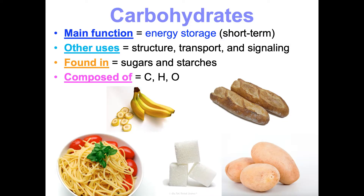If you think back to concept two, when we talked about the six essential elements for life — carbon, hydrogen, oxygen, nitrogen, phosphorus, and sulfur — we'll discuss which ones compose each of the four molecules. Carbs are just made of carbon, hydrogen, and oxygen. That's it. Very simple — just three elements that make such important molecules.